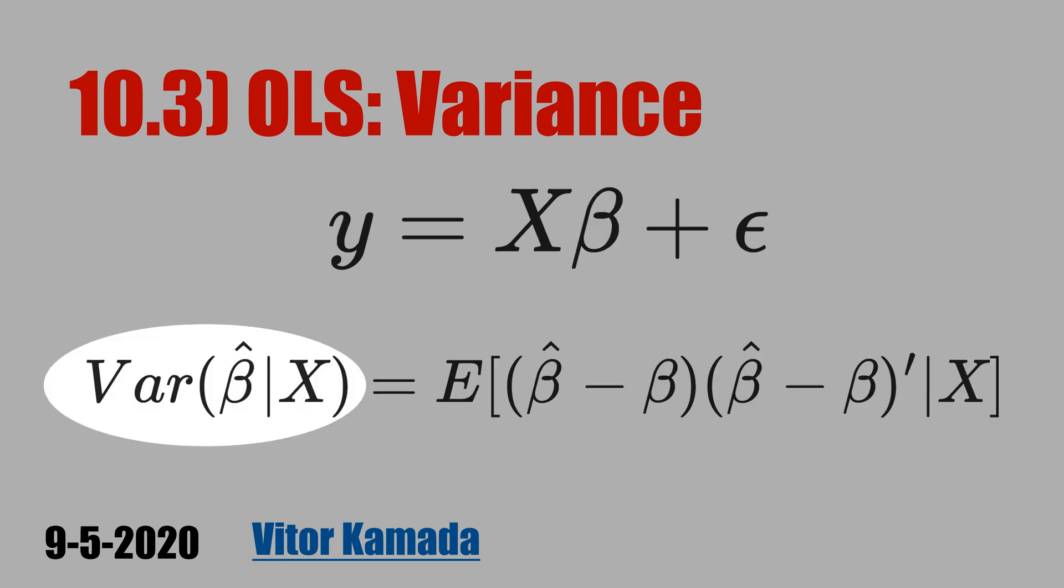Let's see the formula of the variance of beta hat conditional to X. Now, let's learn how to get this part here, the beta hat minus beta.